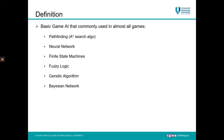There are a few basic game AI algorithms commonly used in almost all games, such as pathfinding, neural networks, finite state machines, fuzzy logic, genetic algorithms, and Bayesian networks. Is there any of these artificial intelligence algorithms that is familiar to you? I'm sure some of you have already encountered these in your AI courses, and I hope you can implement that knowledge inside game development to make more significant games.